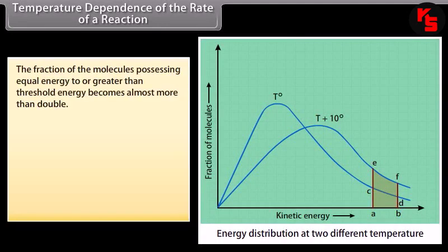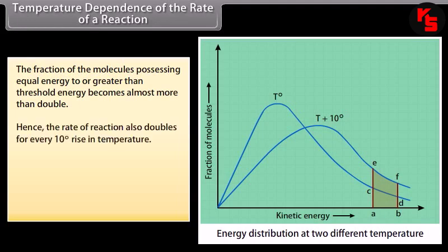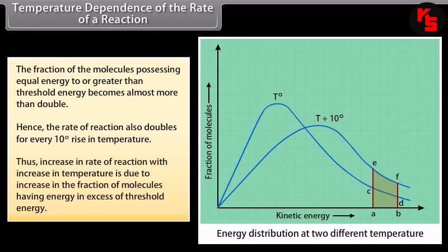The area A-B-E-F is more than double the area A-B-C-D. The fraction of molecules possessing energy equal to or greater than threshold energy becomes almost more than double. Hence, the rate of the reaction doubles for every 10 degrees rise in temperature. Thus, the increase in rate with temperature is due to an increase in the fraction of molecules having energy in excess of threshold energy.